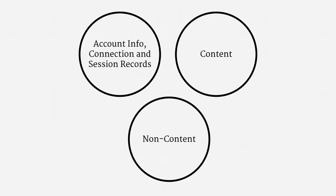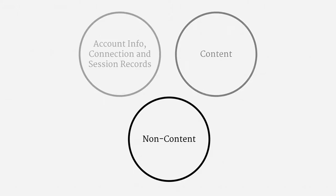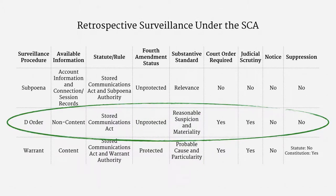Placing cell location information into the SCA categories is pretty easy. It's definitely not account information and doesn't seem to fit within connection or session records. It's also certainly not the content of a communication, so that leaves the catch-all category for non-content. There's fairly widespread agreement that that's the right statutory category. So under the SCA, cell phone location history is accessible with a D-order — a D-order is like a mini-warrant, still requiring permission from a judge, but with a lower standard.